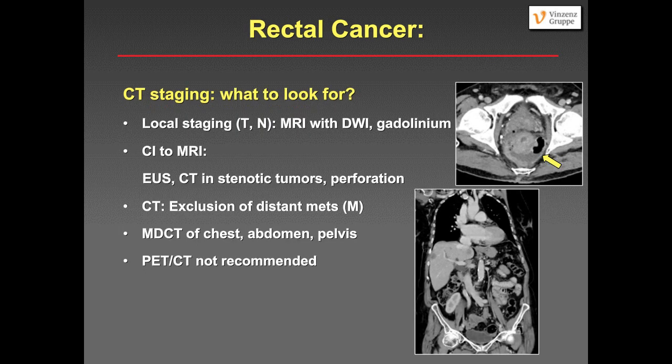For rectal cancer, local staging is done with MRI using diffusion and gadolinium. Only if there are contraindications to MRI does endosonography or CT come into play, including in stenotic tumors and if there is perforation — such as in this case with a large abscess around the tumor. With CT, we exclude distant metastases as in this patient with liver metastases. We perform CT of the chest, abdomen, and pelvis. The European guidelines state that routine use of PET-CT is not recommended, only in very select circumstances.